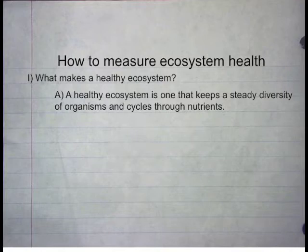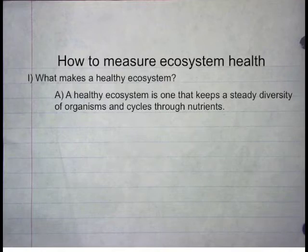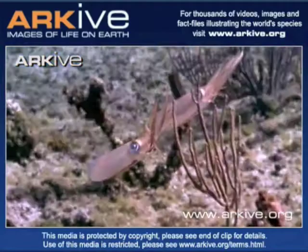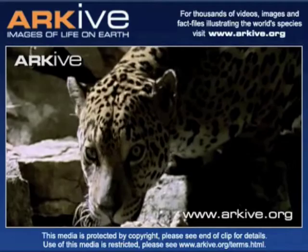Let's take a look at what our definition of a healthy ecosystem is. A healthy ecosystem is one that keeps a steady diversity of organisms and cycles through nutrients. Healthy ecosystems allow a number of different species to coexist and live within an area. Also, the amount of nutrients cycled through a system allows top predators to be sustained.